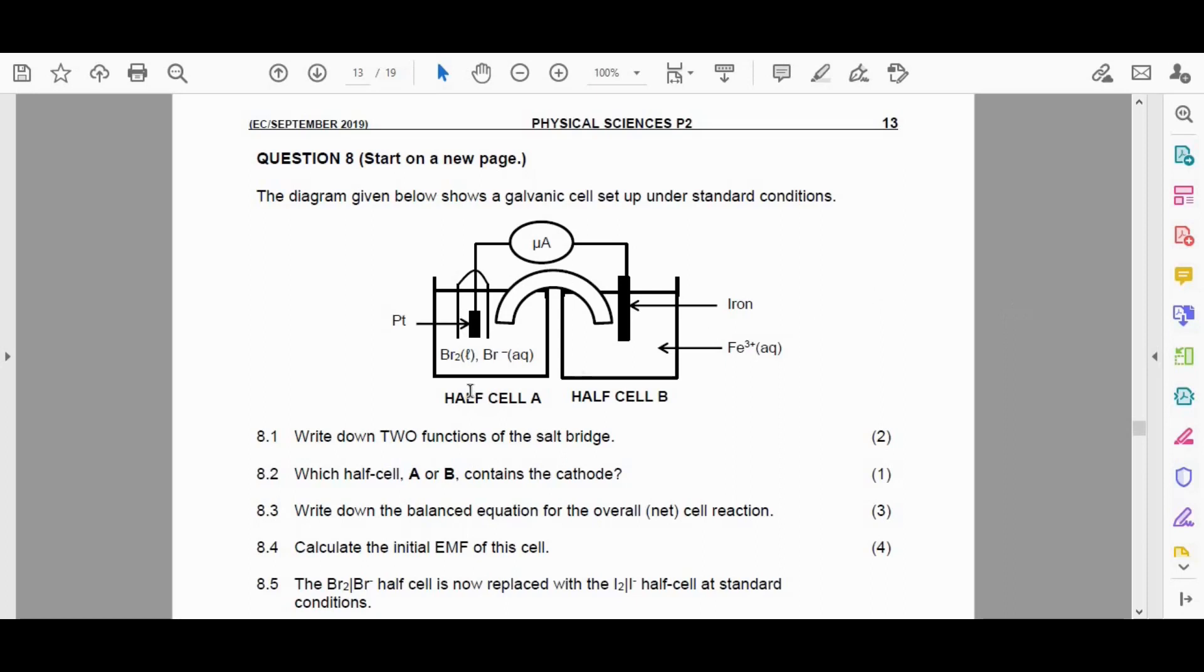We see half cell A and half cell B. We can identify there's a salt bridge connected to what looks like a voltmeter, and we have a platinum electrode and an iron electrode.